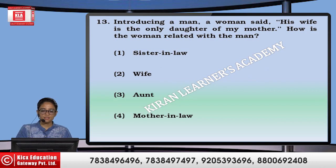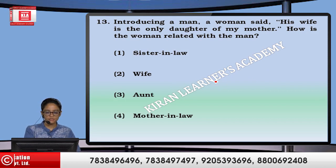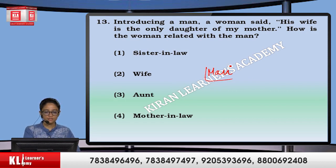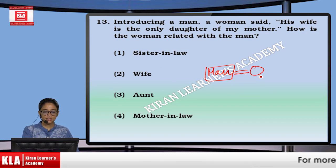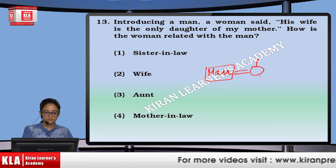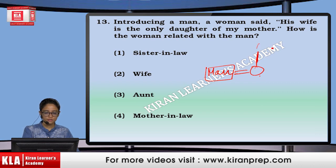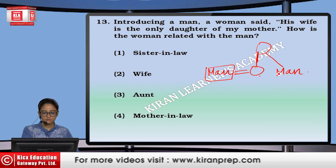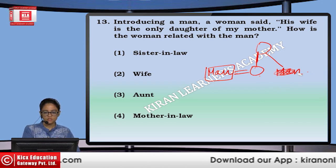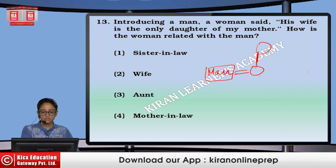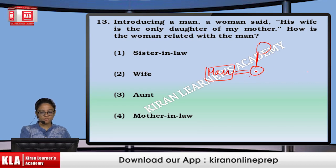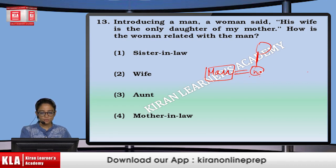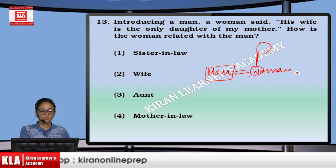Next: introducing a man, a woman said his wife is the only daughter of my mother. Only daughter of my mother means she is the woman. How is the woman related to man? That means wife.